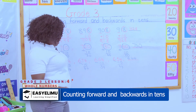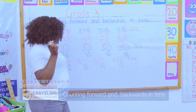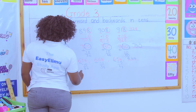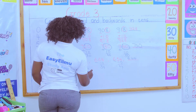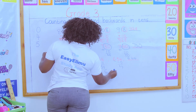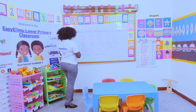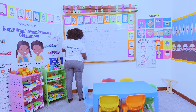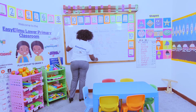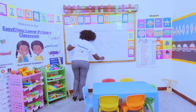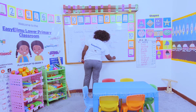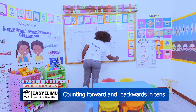Now arrange the following numbers from 300 to 400 in the forward manner — counting in tens. Our starting number is 300. Increase it by 10: 310. After 310, increase by 10: 320, 330, 340, 350, 360, 370, 380, 390.